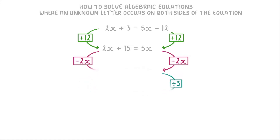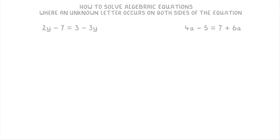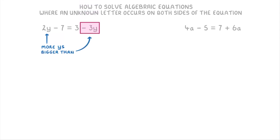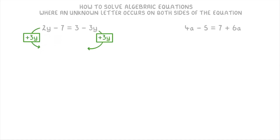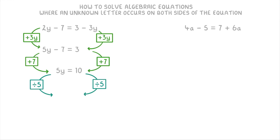Let's try a couple more. In this first one we have 2y - 7 = 3 - 3y. We want to get the y's on one side and the numbers on the other. At the moment there are more y's on the left side than the right, because positive 2y is bigger than negative 3y. So it'll be easier to put the y's on the left and the numbers on the right. We add 3y to both sides to get 5y - 7 = 3, then add 7 to both sides to get 5y = 10, and finally divide both sides by 5 to find y = 2.